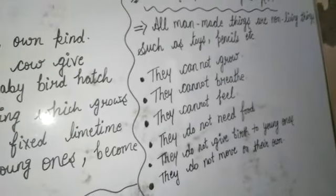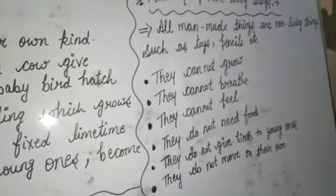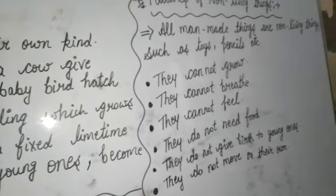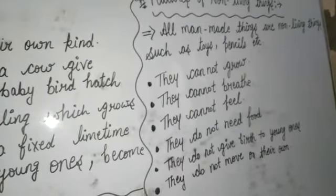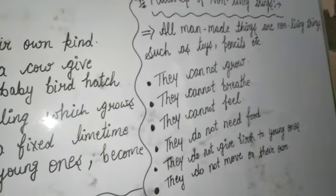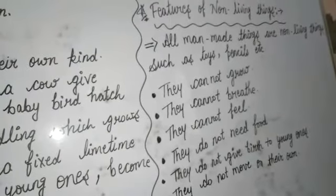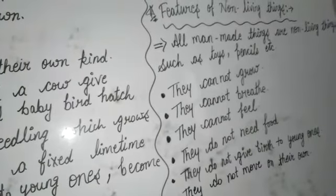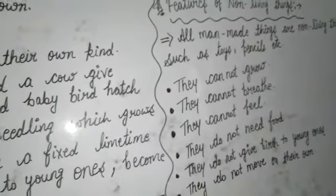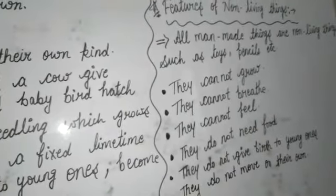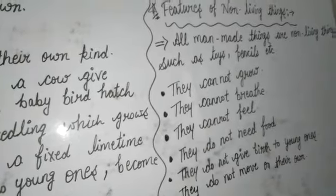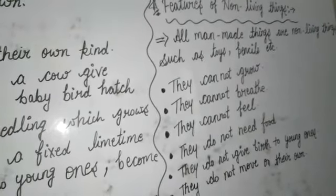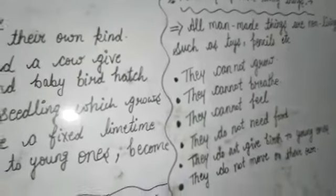For example, हमारे घर में table, chair होती हैं — जब तक हम उन्हें उठाकर दूसरी जगह नहीं रखेंगे, वो अपने आप चलकर नहीं जा सकतीं. तो ये हैं non-living things की features. आपके book में इसके बाद एक picture दी है — वो picture देखकर आपको बताना है कि कौन सी living things हैं और कौन सी non-living things हैं. अगर living things है तो L लिखना, non-living things है तो N लिखना.